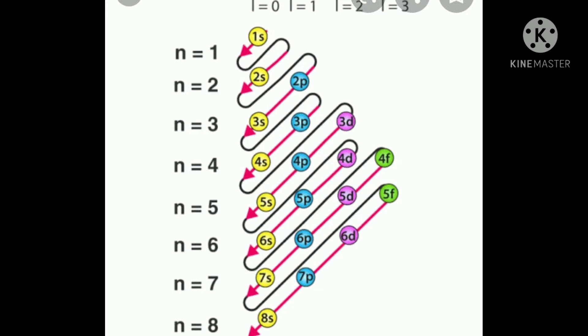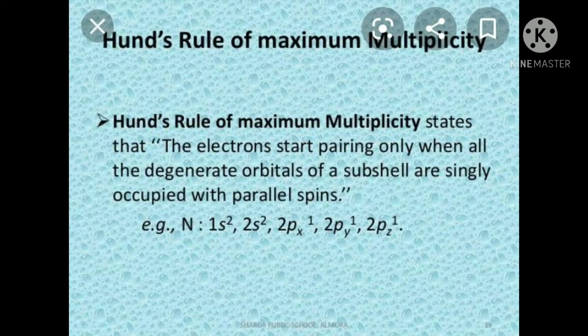Hund's rule of maximum multiplicity, or simply Hund's rule, has two parts. First part: in the filling of orbitals of a degenerate set, electron pairing is not possible until all the orbitals of the set contain one electron each.